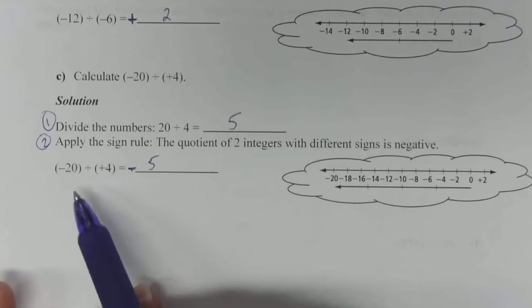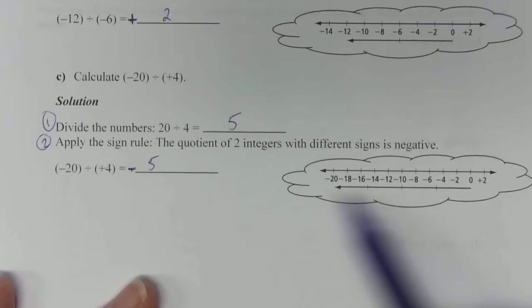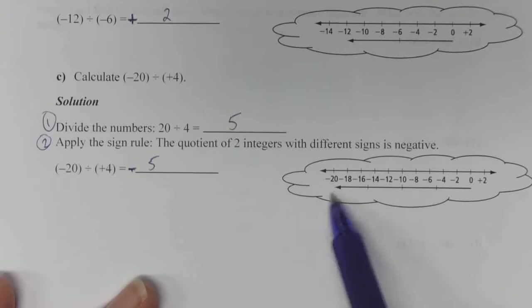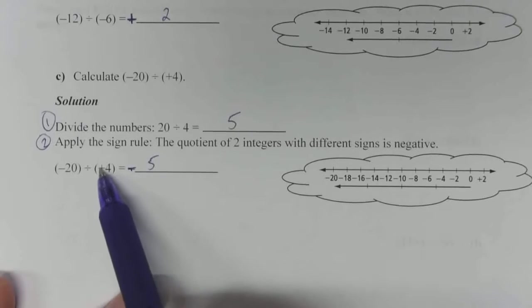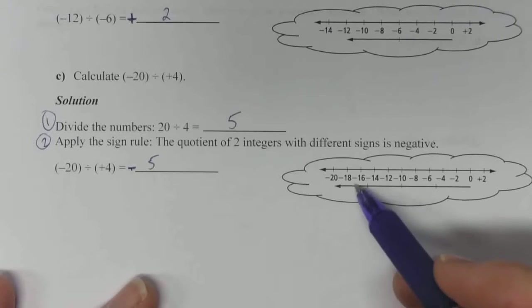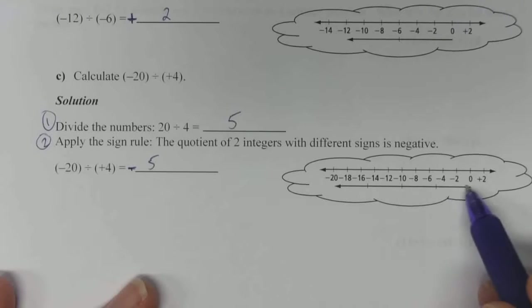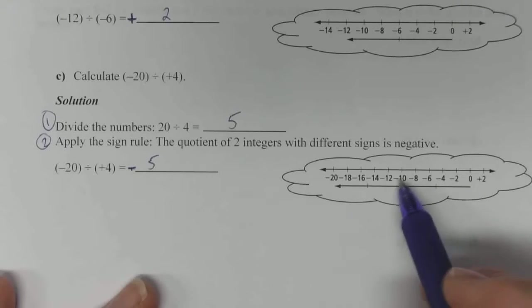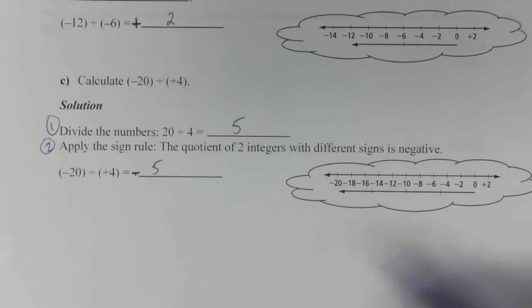Again, we can look at a number line if you wish. Start with negative 20. Start at 0, go to negative 20. You want to break it into four groups this time. Four equal groups divided into quarters. Each one is a length of negative 5. Your answer is negative 5.